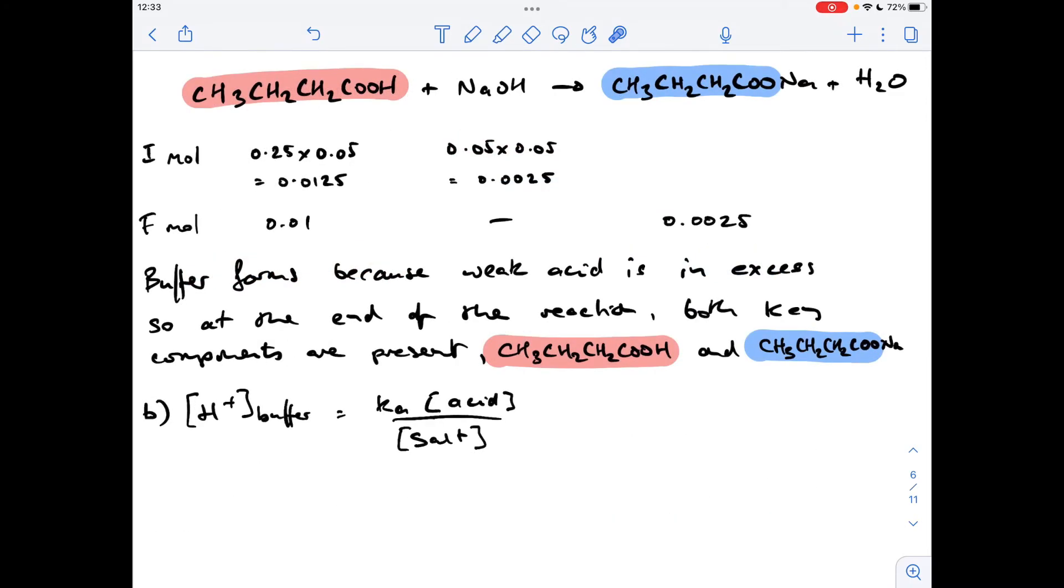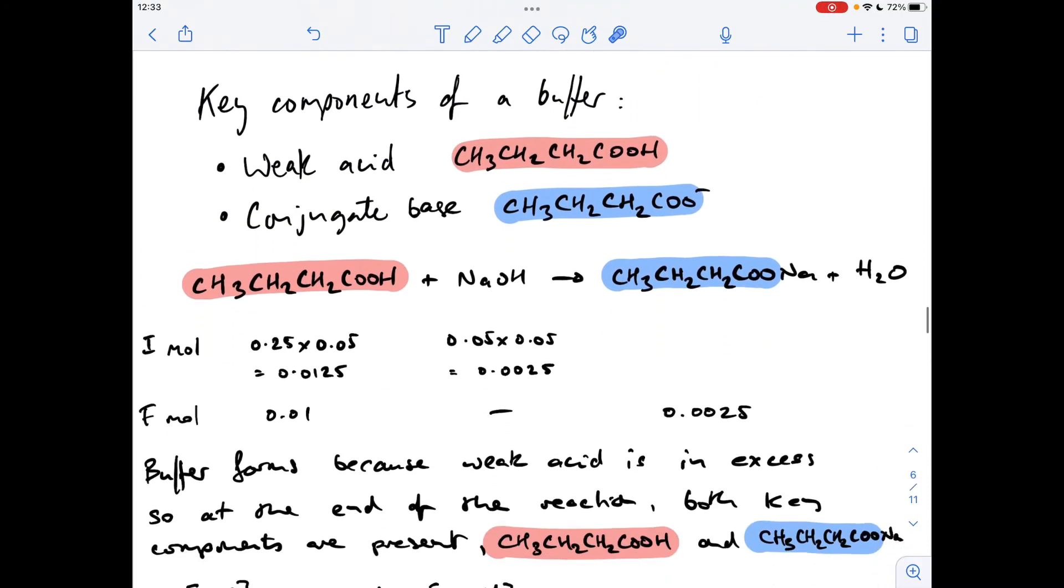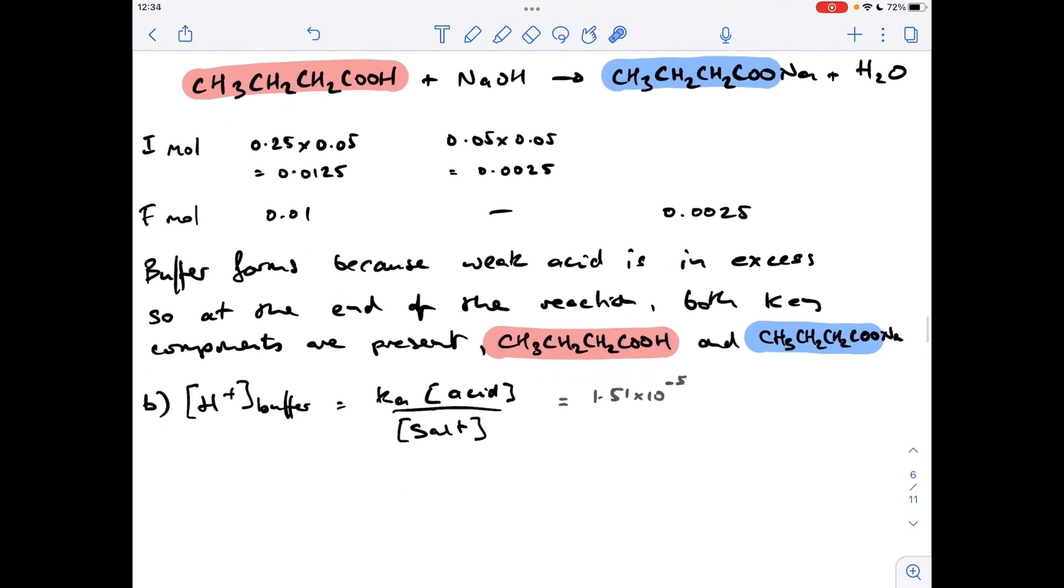Okay, so moving on to part B now, we've got to calculate the pH of the buffer. So you can see I've written up my Ka over salt expression. So the H-plus concentration of the buffer is equal to the Ka for the weak acid multiplied by the acid concentration divided by the salt concentration. So we were given the Ka for the acid. It is 1.51 times 10 to the minus 5.